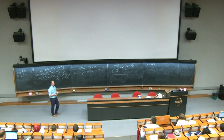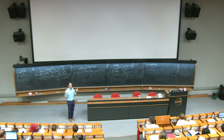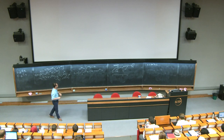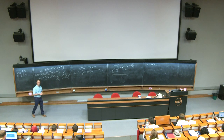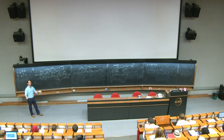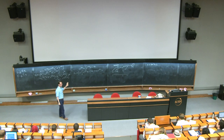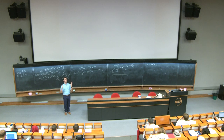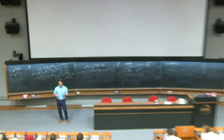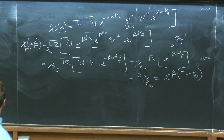We can do single qubit gates and we also looked at interacting ions. Now today I want to start looking at the interaction between electromagnetic radiation and trapped ions or trapped atoms. Most of what I'm going to do now is also applicable to any particle in a trap — any particle that has an internal structure in a trap.